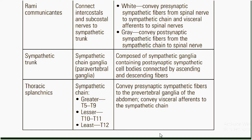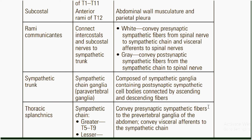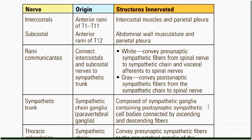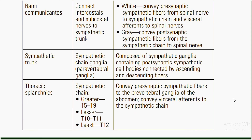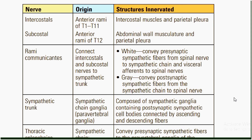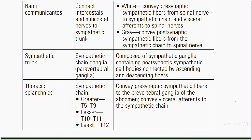The sympathetic trunk and ganglia parallel the vertebrae; this is where they originate. They are composed of sympathetic ganglia containing postsynaptic sympathetic cell bodies connected by ascending and descending fibers. Thoracic splanchnic nerves: greater splanchnic T5–T9, lesser splanchnic T10–T11, and least splanchnic T12. They convey presynaptic sympathetic fibers to the pre-vertebral ganglia of the abdomen and visceral afferents to the sympathetic chain.